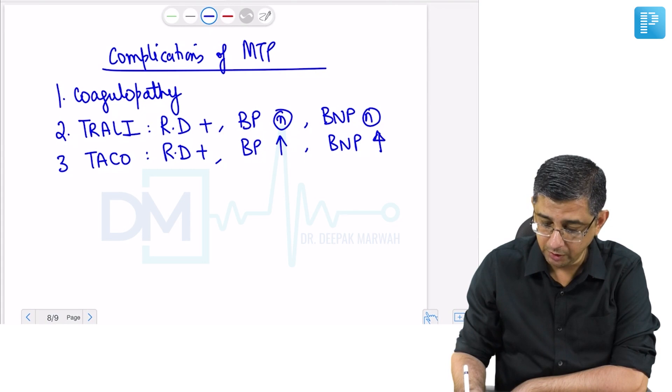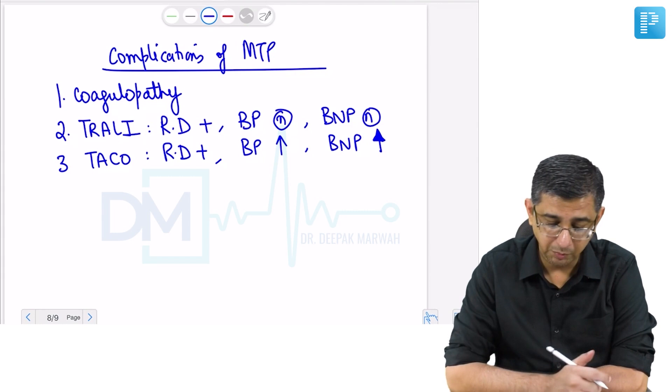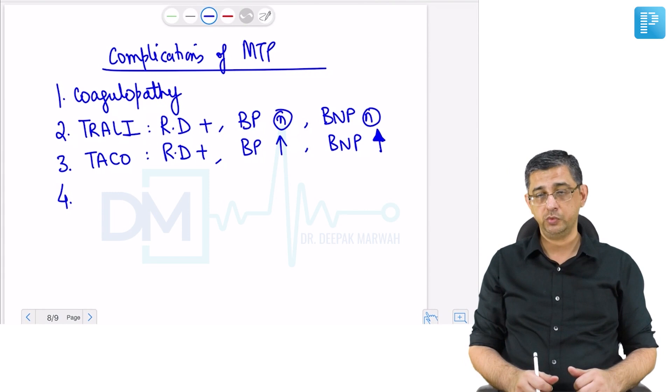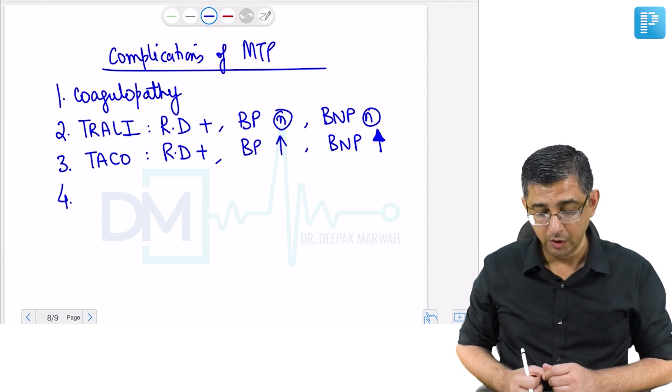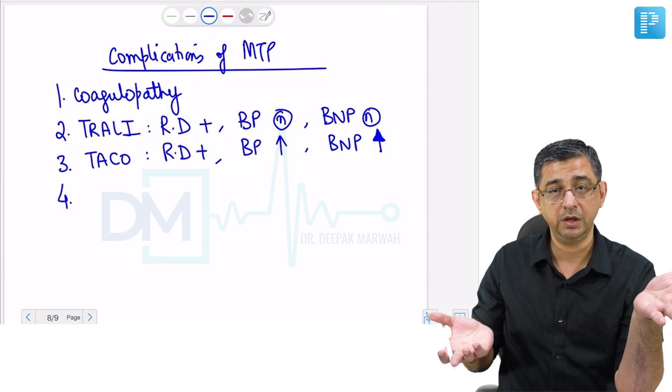BNP levels will always be increased in cardiogenic pulmonary edema, that is Transfusion Associated Circulatory Overload. TRALI and TACO are two reasons for respiratory distress after massive transfusion protocol. Our objective is to clear the coagulopathy component. Coagulopathy can be seen, but our objective is to clear that.